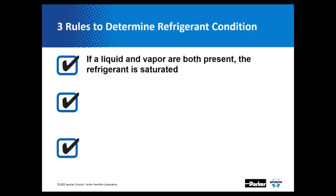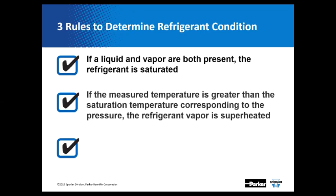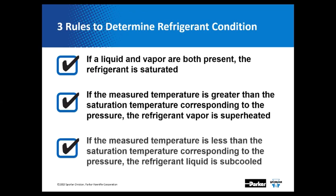To summarize the rules for determining refrigerant condition: if we have both liquid and vapor, the refrigerant is saturated — that's when we use PT charts to determine boiling and condensing points. If the measured temperature is greater than the saturation temperature, we have superheated vapor, meaning only vapor. If the measured temperature is less than the saturation temperature, the liquid is subcooled, meaning only liquid is present.